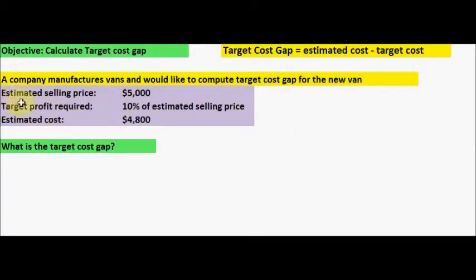We have the estimated selling price of $5,000. The target profit required is 10% of estimated selling price, and the estimated cost is $4,800. So what is the target cost gap?